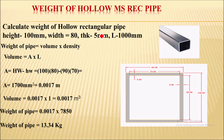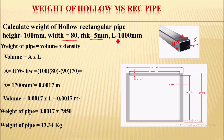So calculate the weight of hollow rectangular pipe. The description is given below. Height H is 100 mm, width is 80 mm, thickness is 5 mm, and total length is 1000 mm, which means 1 meter.